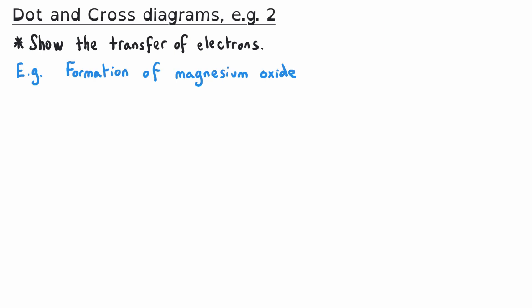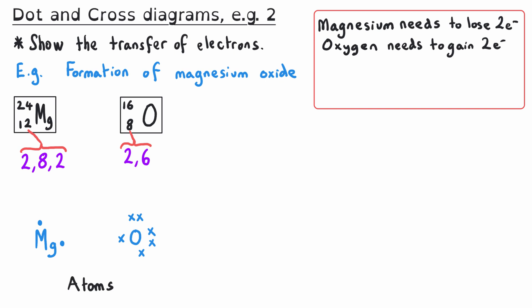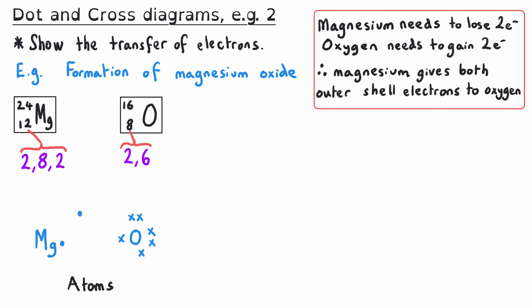For a second example, the formation of magnesium oxide: magnesium has an atomic number of 12 — so 12 protons and 12 electrons — giving an electronic structure of 2,8,2, meaning it has two electrons in its outer shell to lose. Oxygen has an atomic number of 8 — 8 protons, 8 electrons — with an electronic structure of 2,6, so it needs to gain 2 electrons to fill its outer shell. In the dot and cross diagram, magnesium's electrons are shown as two dots and oxygen's electrons as crosses. Both electrons from magnesium's outer shell transfer across to the oxygen atom's outer shell.